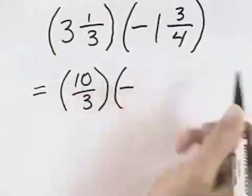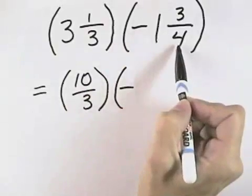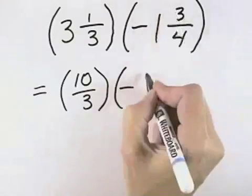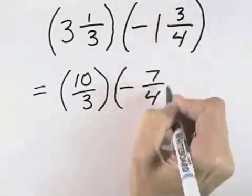The second one is negative, and 1 times 4 is 4, plus the 3 that's in the numerator is 7, for 7 over 4.